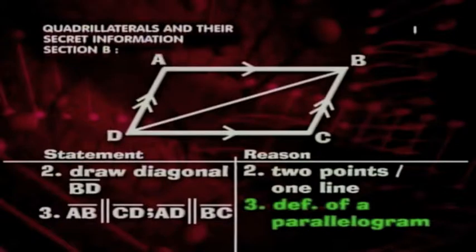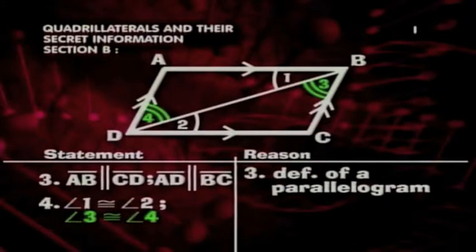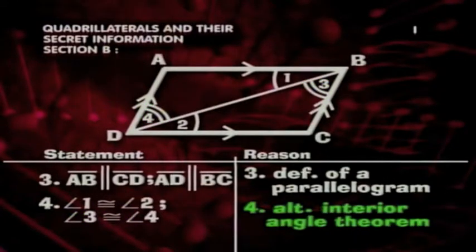Now we have parallel lines and a transversal going on, and we can really figure out some angle correspondences. For our fourth step, we'll state that angle 1 is congruent to angle 2, and angle 3 is congruent to angle 4. Thanks to the alternate interior angle theorem.